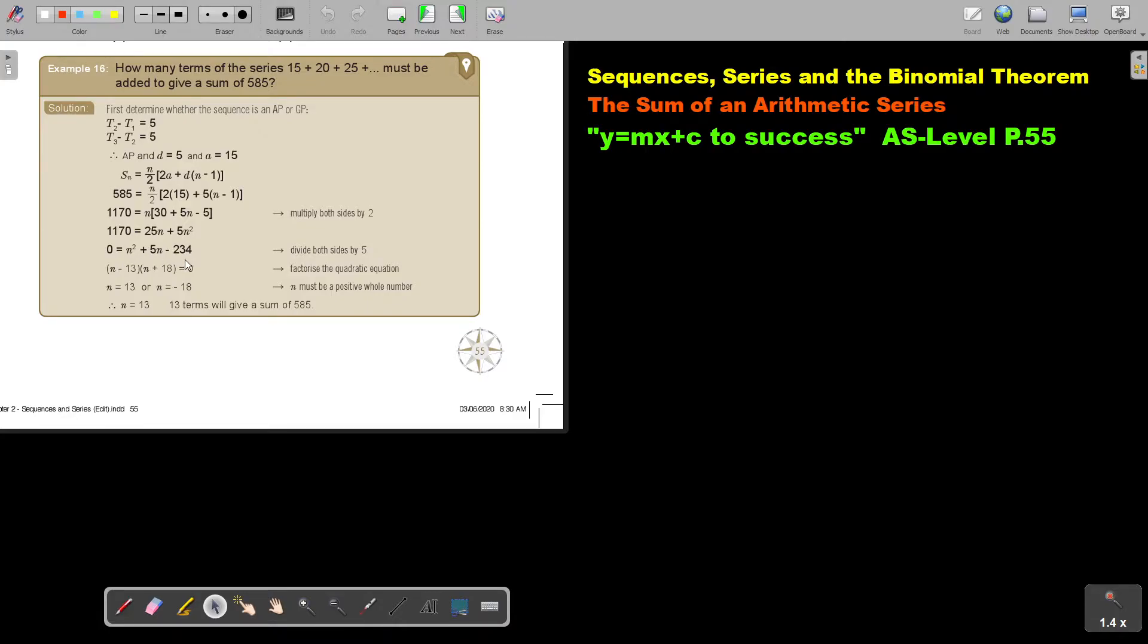So as soon as I factorize it, I get two values. But can you remember that N is the position, so N cannot be negative or a fraction. So therefore, it will just be 13 terms.